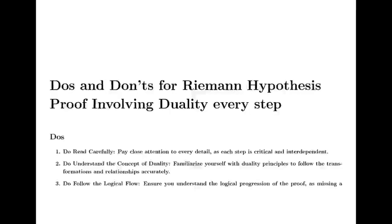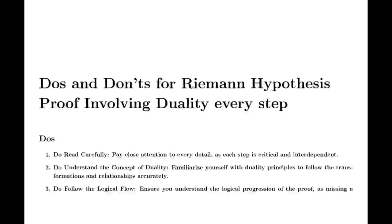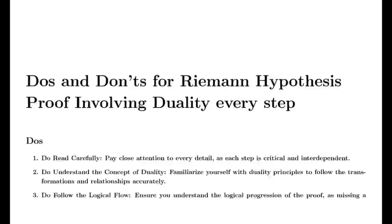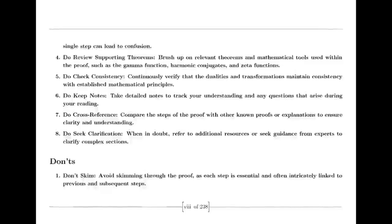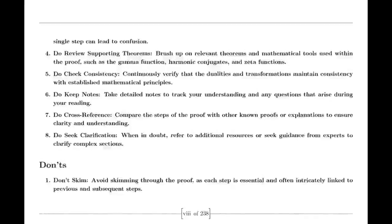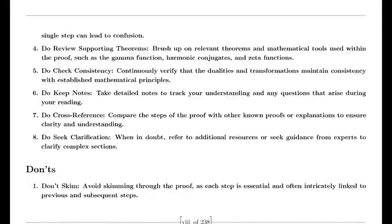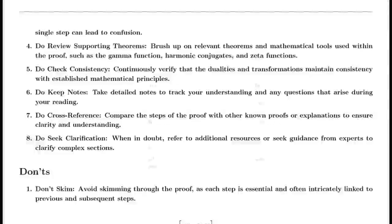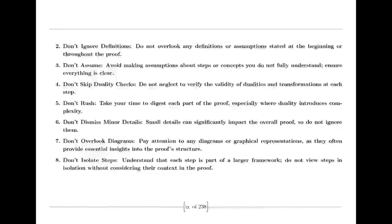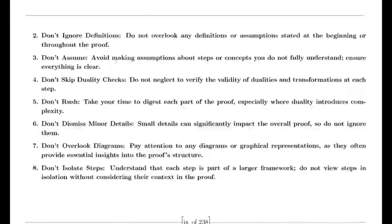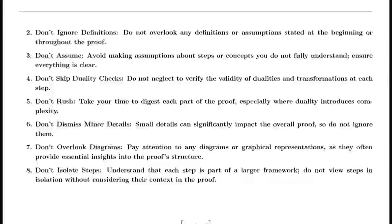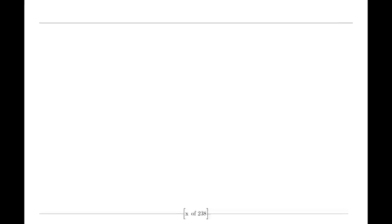Euler didn't stop there. He also tackled the Basel problem, concerned with finding the exact sum of the reciprocals of the squares of the integers. By examining the sine function and its product representation, Euler derived a formula for this sum, showing that it equals π²/6. This was a significant achievement highlighting Euler's ability to uncover connections between different mathematical concepts.